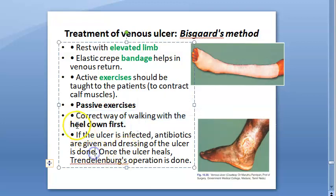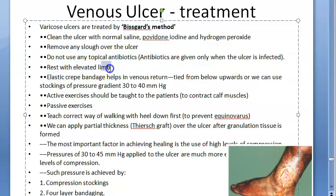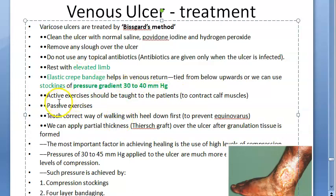The way to walk is with the heel down first. Also clean the ulcer and remove slough. Do not use antibiotics unless it is infected. The elastic crepe bandage should be tied from below upwards, or you can use stockings. The pressure gradient should be 30 to 40 millimeters of mercury.